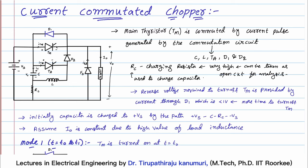This entire circuit will be responsible for commutation of the main thyristor. Whatever current is passing through this LC circuit — that is, the tank circuit — that current is responsible for turning off the main thyristor. So that is why this is called current commutation.